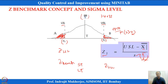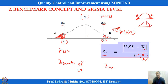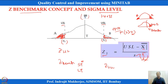Z benchmark short-term means: Minitab calculates the total proportion non-conforming on both sides (A + B), places it in one tail, and finds the corresponding Z value. That is the Z benchmark. This concept is used to define the sigma level of the process in Minitab.